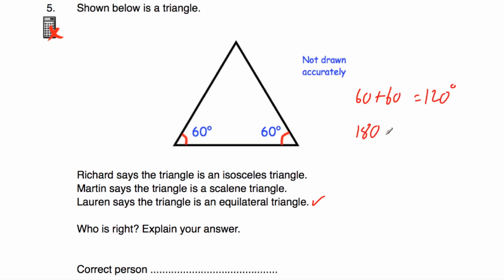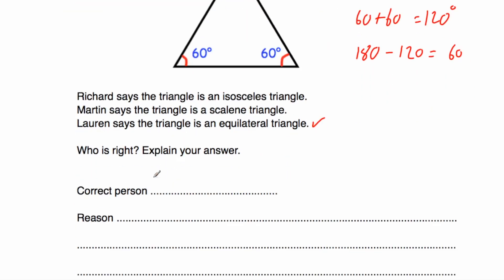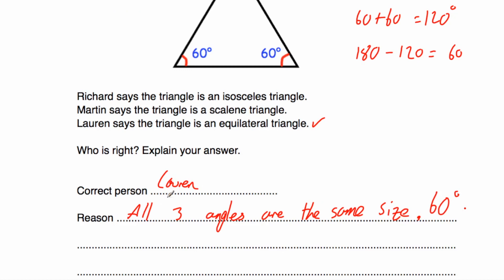180 take away 120 is equal to 60. So that angle at the top would be 60 degrees — making it an equilateral triangle. Each of the angles is 60 degrees, so it's an equilateral triangle. Lauren is correct because all three angles are the same size: 60 degrees.